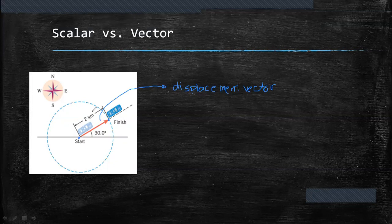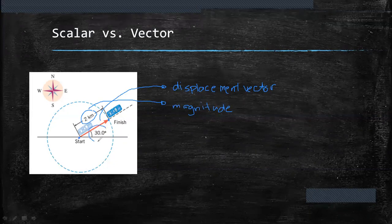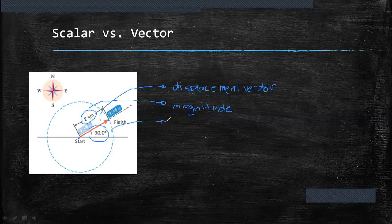The length of the arrow represents the magnitude of the displacement vector. By convention, the length of the vector arrow is proportional to the magnitude of the vector. 30 degrees gives us the sense of the direction of the displacement vector. So magnitude and direction are the important components of a vector.